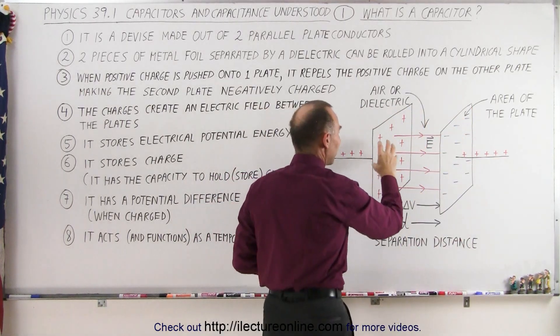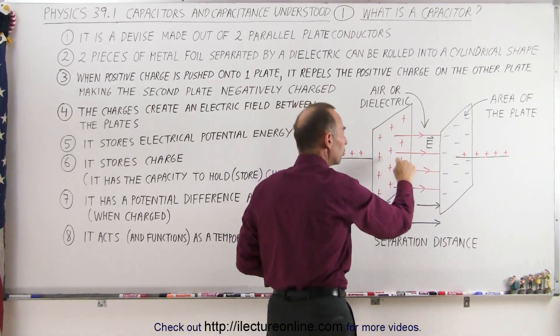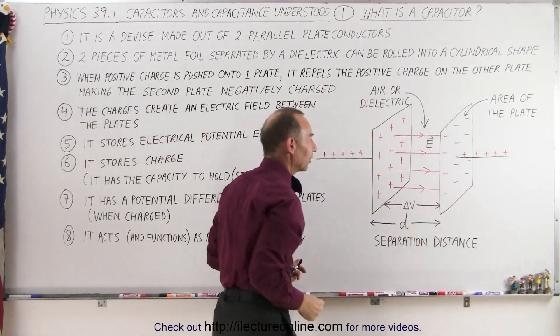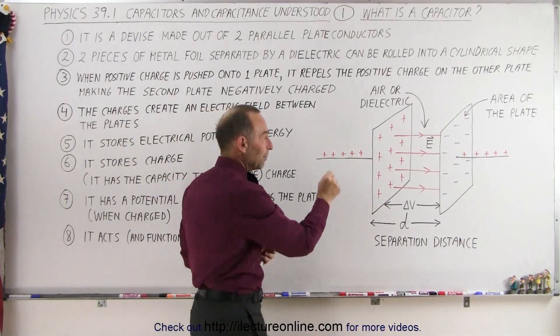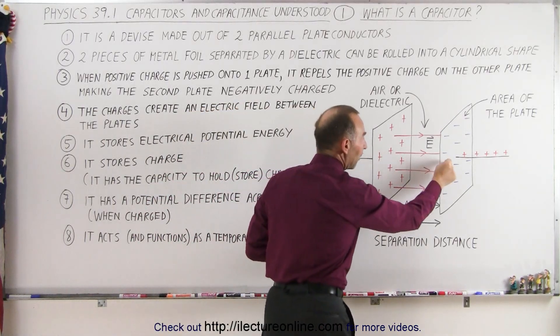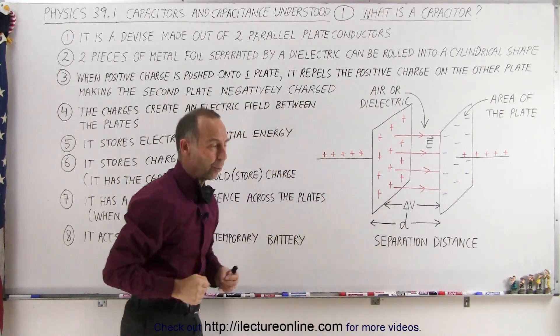The amount of charge you have on one side, the positive charge, will be equal to the amount of negative charge you have on the other side. Basically for every positive charge you push onto the plate, a positive charge will get pushed off the other plate, and that's how that works.